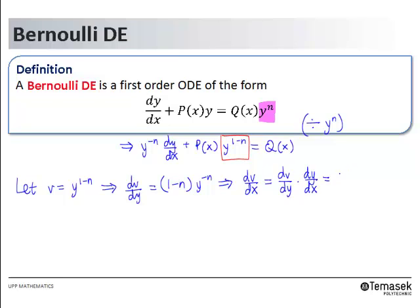The derivative will be given by 1 minus n times y to the power negative n dy/dx.